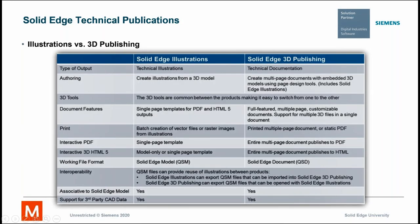There are two separate products. One is called Solid Edge Illustrations and the other is Solid Edge 3D Publishing. The biggest difference is that illustrations are a single document, single page at a time, whereas 3D publishing is very rich documents with multiple pages and multiple models on the same document. And they can be interchangeable — you can bring in data from an illustration into publishing and vice versa.